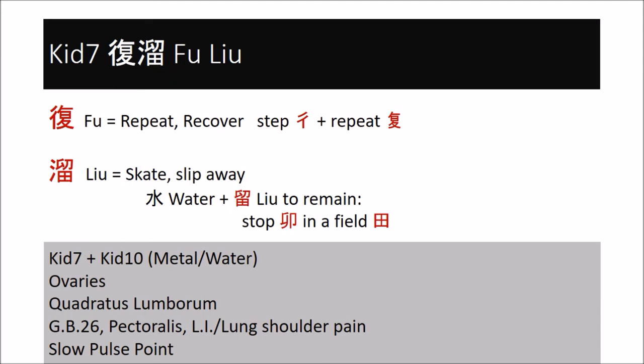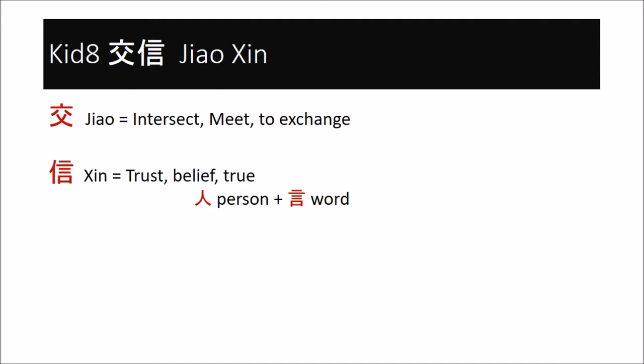Kidney seven is also a point I would choose for pain on the back of the knee. Kidney eight, Jiaoxin, the meeting of trust or intersecting trust, is a point I consider to be basically part of kidney seven. However, in the context of the yin qiao channel, I do consider it as a separate point from kidney seven.